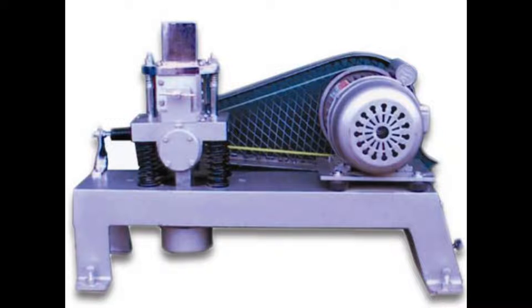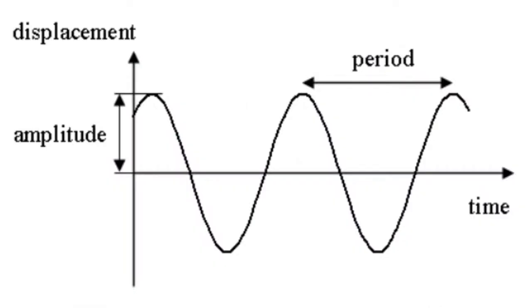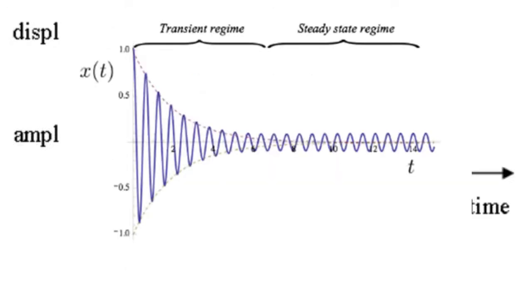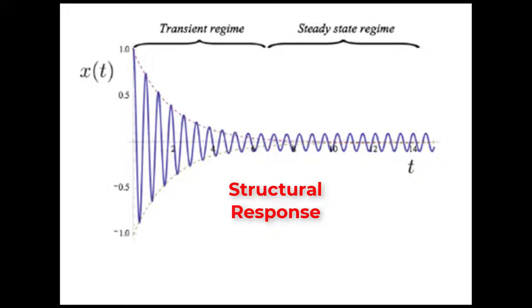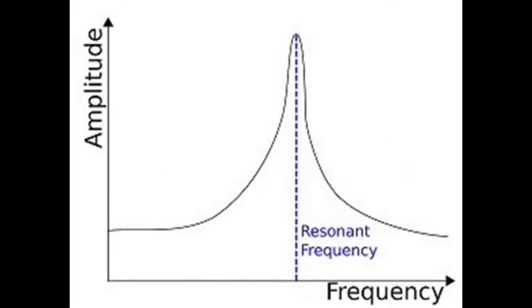Such machines typically impart harmonic motion on the base or supporting structure. The interest of the structural engineer is mostly to understand the dynamic response, and the most critical part is to capture the stage where there could be a possible likelihood of resonance — this is totally undesirable. This resonance event happens only when the natural frequency gets very close to the operating input frequency of the machine.